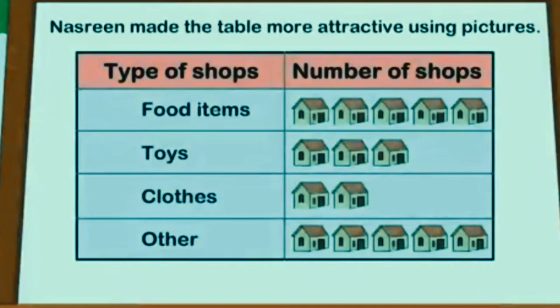We shall ask Nasrin, 'What do these pictures mean?' Nasrin said, 'One picture stands for one shop.' So there are three pictures for toy shops because there are three toy shops. Suppose there are a lot of shops — will you draw as many pictures?